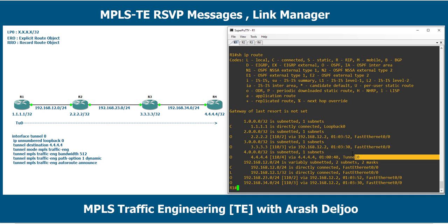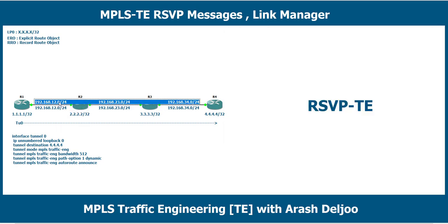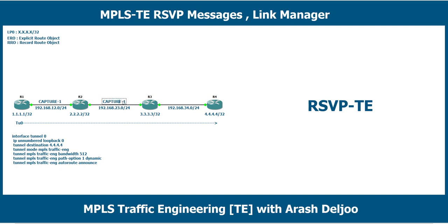Now I'm going to show you the Wireshark captures of the links that I captured before. I captured the link between Router 1 and 2, calling it capture 1-2. I also captured the link between Router 2 and 3, capture 2-3, and the link between Router 3 and 4, capture 3-4. I will show you the results of these captures.